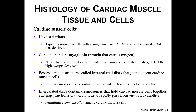As a refresher, cardiac muscle cells are striated. They tend to branch as opposed to skeletal muscle fibers, and they are shorter and wider than skeletal muscle fibers. Cardiac muscle cells contain a good amount of myoglobin — you may be familiar with myoglobin's cousin, hemoglobin. Myoglobin carries oxygen within muscles specifically; 'myo' means muscle. Nearly half of the volume within a cardiac muscle cell is full of mitochondria, which function through cellular respiration to produce ATP, our favorite source of energy.